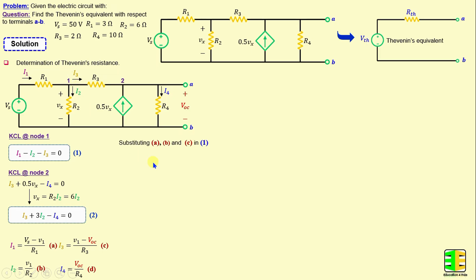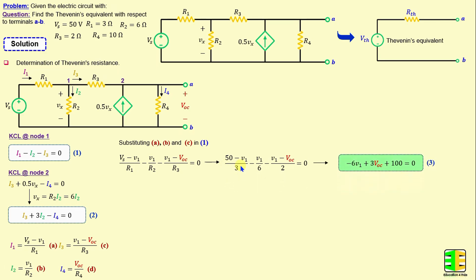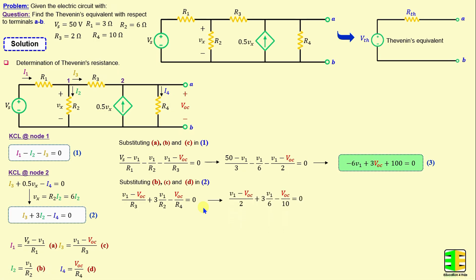Now by substituting A, B, and C into equation 1, we can write: (Vs minus V1) over R1 minus V1 over R2 minus (V1 minus VOC) over R3 equals 0. Replacing voltages and resistors with their numerical values and simplifying, we obtain: negative 6 times V1 plus 3 VOC plus 100 equals 0. Now by substituting B, C, and D into equation 2, we can write: (V1 minus VOC) over R3 plus 3 times V1 over R2 minus VOC over R4 equals 0. Simplifying, we obtain: 10 times V1 minus 6 VOC equals 0.